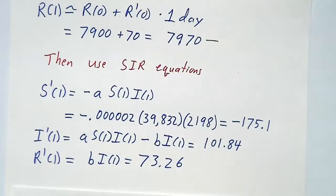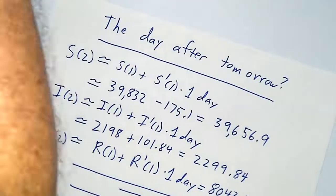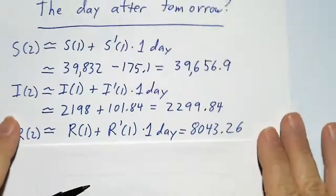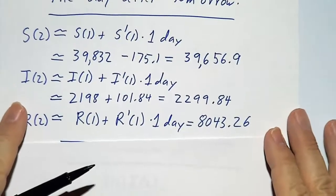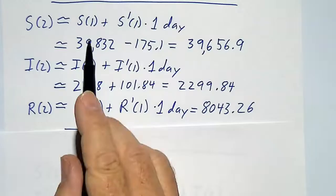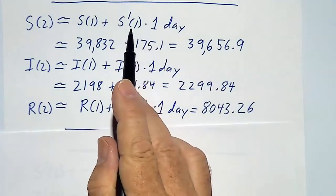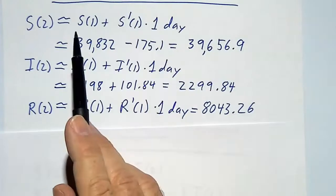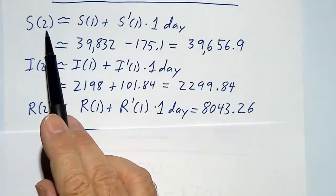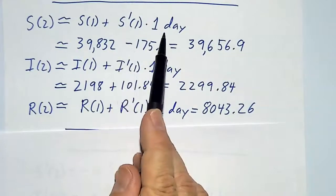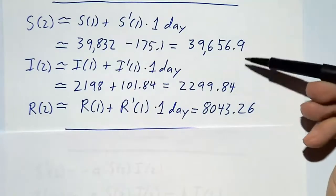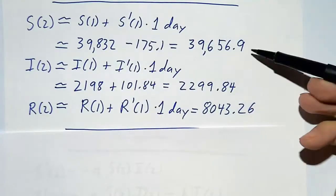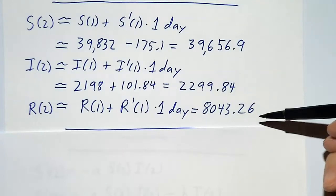How about the day after tomorrow? Same deal. To figure out what we have the day after tomorrow, you just take what we have tomorrow plus how fast things are changing tomorrow times one day. The way that we got from day zero to day one is the same as the way we're going to get from day one to day two. We do the same for I, we do the same for R, and now we've got new values of S, I, and R.